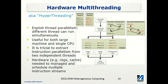Whether threads can execute at the same time also depends on the resources they require on the processor — if they require multipliers or floating-point units. But often you can easily discover instructions from different instruction streams and execute them together. It is useful for large machines and for a single CPU, as it is trivial to extract instruction parallelism from two independent threads.